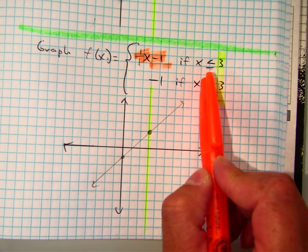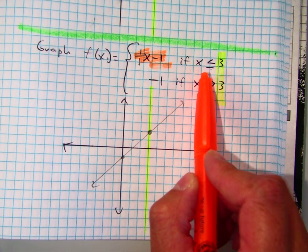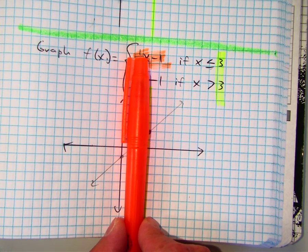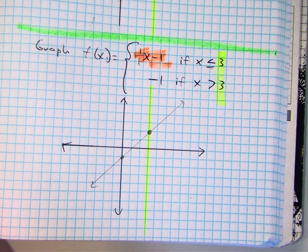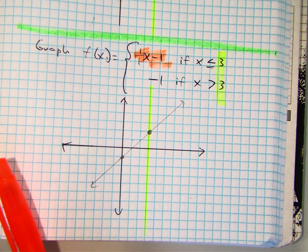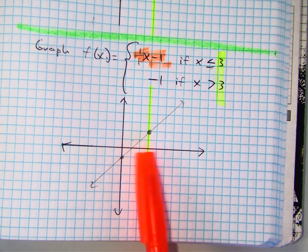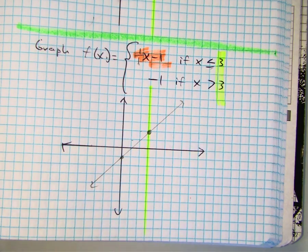What does it mean to be less than or equal to 3? What part am I going to erase? Well, I'm going to highlight to the left, right? So that means I need to erase everything to the right.